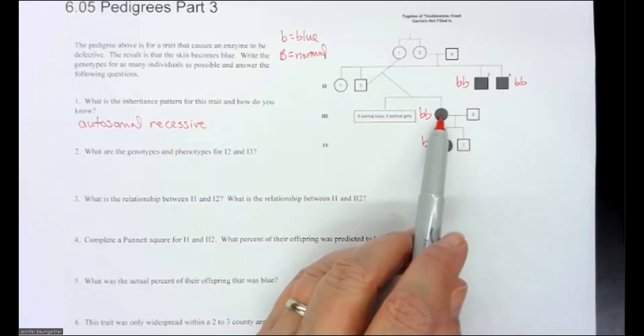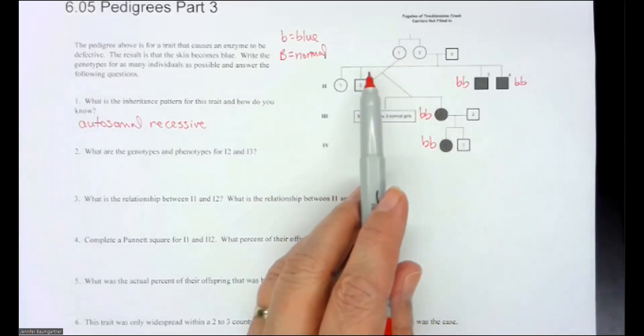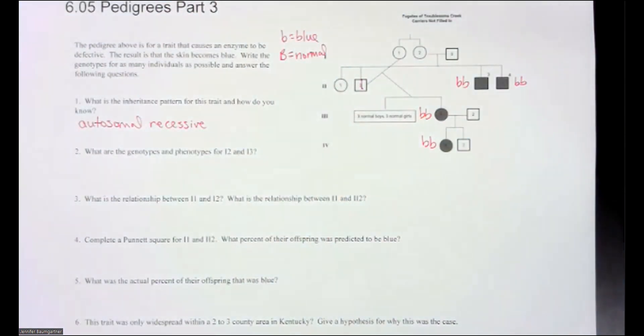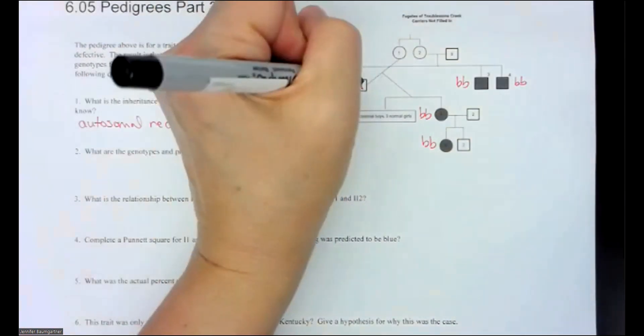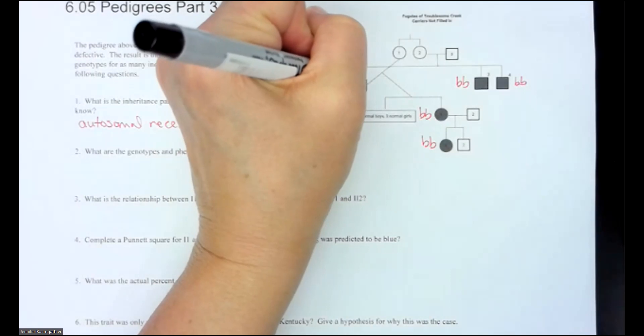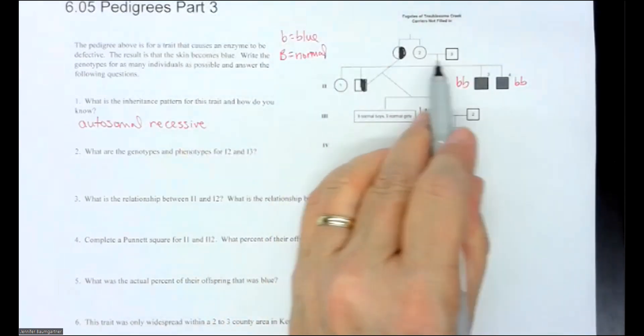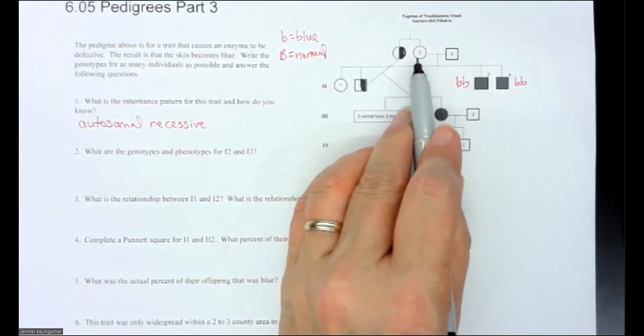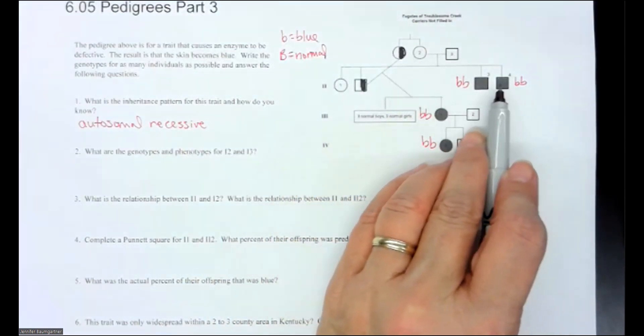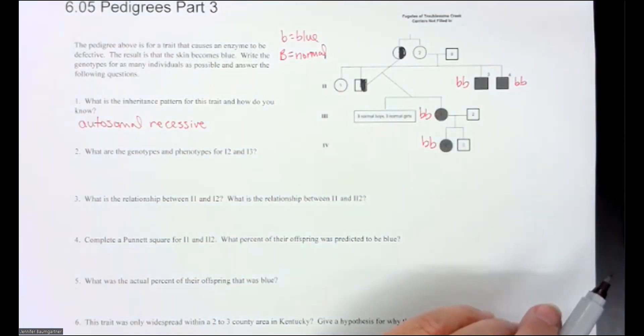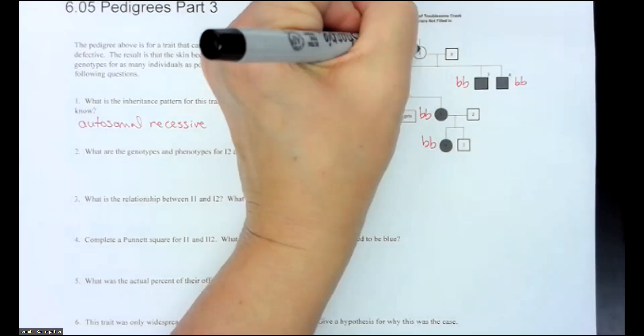So we said that if this gal has the disease, but her mom and dad are normal, they have to be carriers. And notice it said, let me do this in black so I stay consistent with my coloring. We said the carriers were not filled in here. And we have the same thing going on here, correct? Because we have two normal parents, but three, two of their sons have the disease and one of them is a carrier. So that means that these guys also have to be carriers.